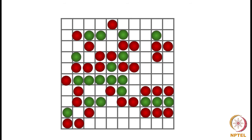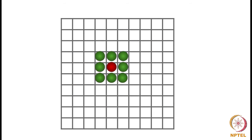For example, every cell either has a red person or a green person, or it is empty. Now, a cell's neighbors are the cells that touch it, including the diagonal cells. A cell that is not on the boundary will have eight neighbors. For example, this red node is an internal node — the cell that has the red person has eight cells which are its neighboring cells.